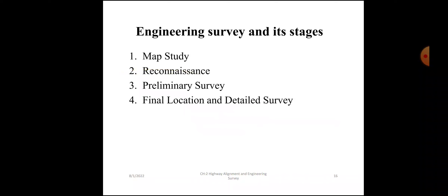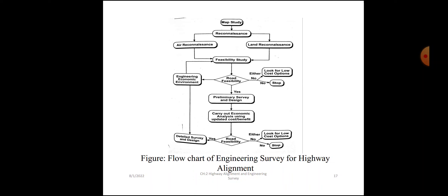Engineering survey and its stages: the flowchart of engineering survey for highway alignment includes map study, reconnaissance — which consists of air reconnaissance and land reconnaissance — and feasibility study, followed by preliminary survey, and finally final location and detail survey.